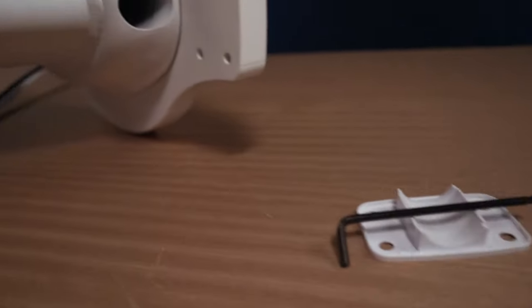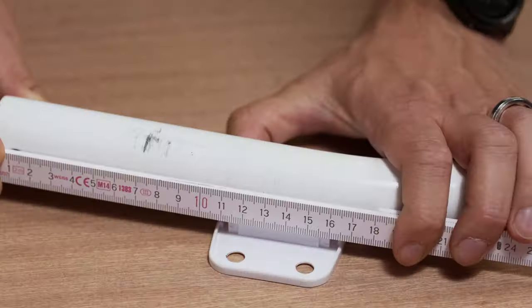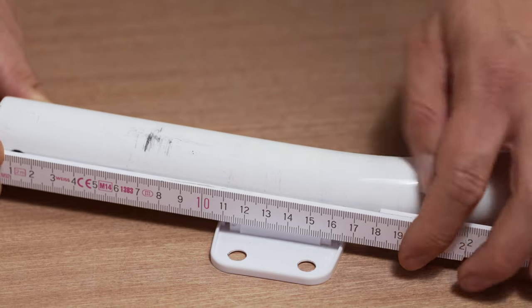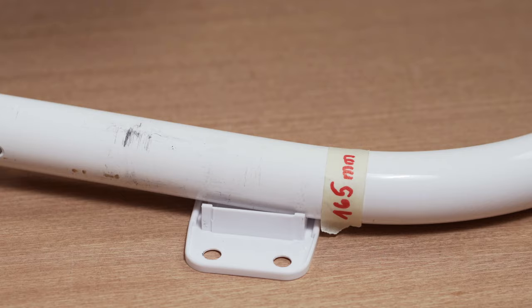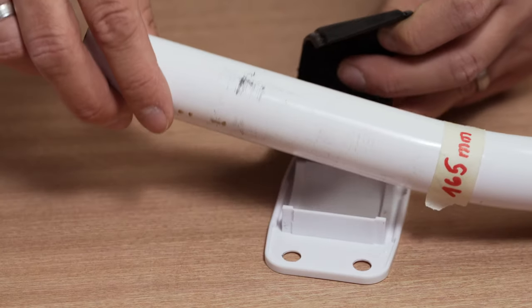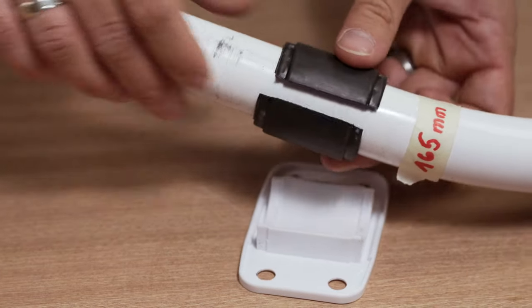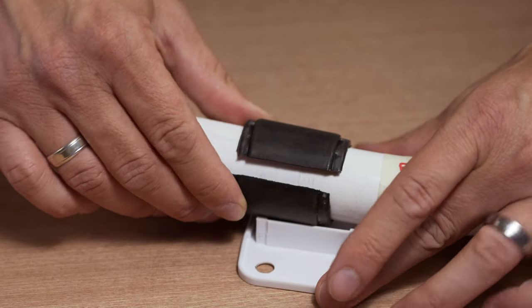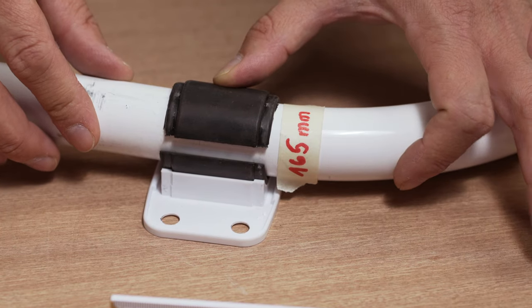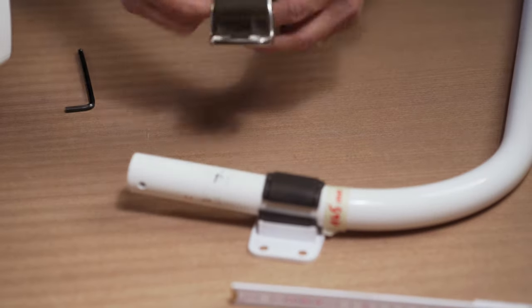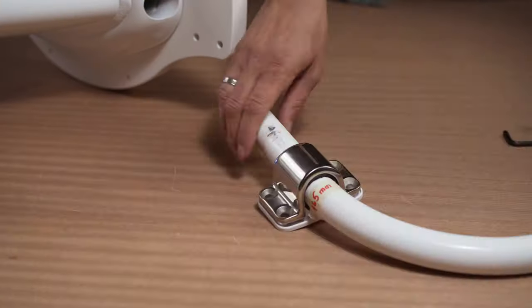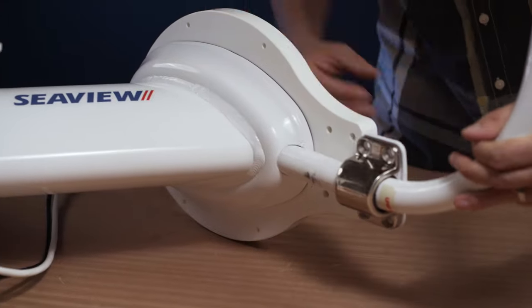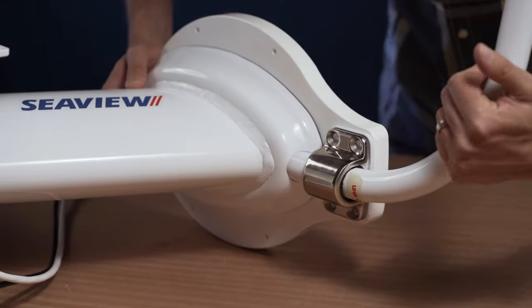Next step is to assemble the bar for the anchor light. According to the Seaview instructions, the mounting bracket must be fitted at a distance of 165mm from the end of the bar. Mark the measurement on the bar and attach the mounting bracket accordingly. It's important to make sure that the notches in the rubber seal are aligned exactly with those of the bracket. Now push the anchor light bar into the mount and fix in place with the four screws.